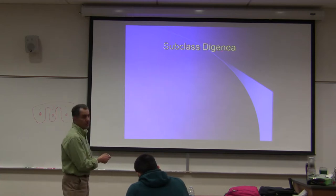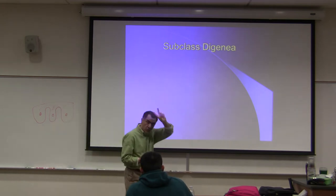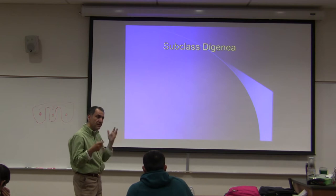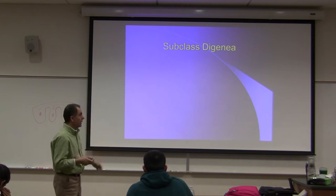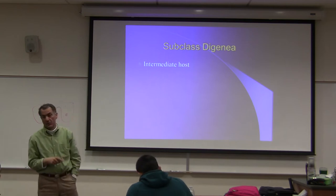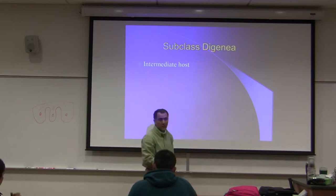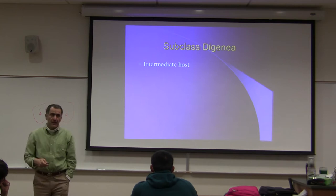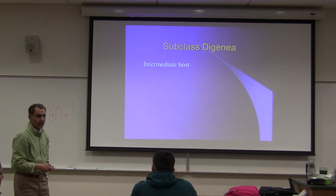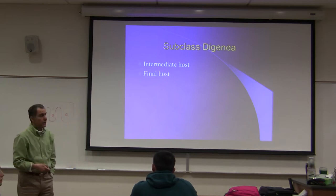Some textbooks say there is class Digenea and class Monogenea - 'di' means two and 'mono' means one. I will not ask you about subclasses on the exam. They have intermediate hosts - since they have two hosts, Digenea means two hosts. Intermediate hosts are usually invertebrates, and final hosts are usually vertebrates.